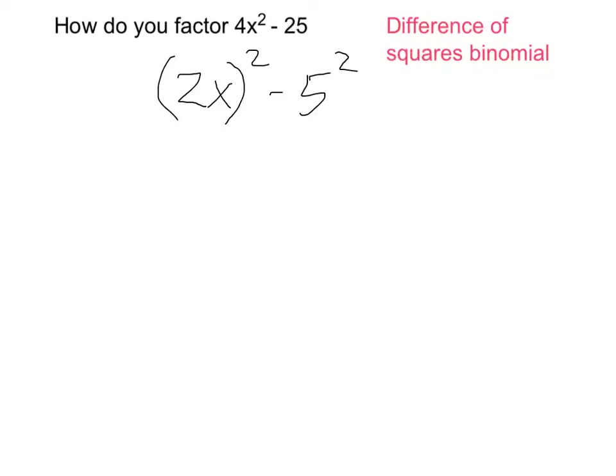5 squared is 25, 2 times x squared is 4x squared. And a perfect square binomial like this can be rewritten as a plus factor and a minus factor as such.